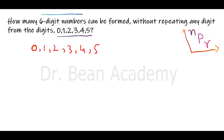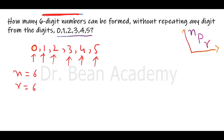At first look I was trying to solve it like this: the number of digits given is 6, so n equals 6, and r is also equal to 6 because we need six-digit numbers. So I thought I could just calculate 6P6, but then on second thought I realized I might be missing something.